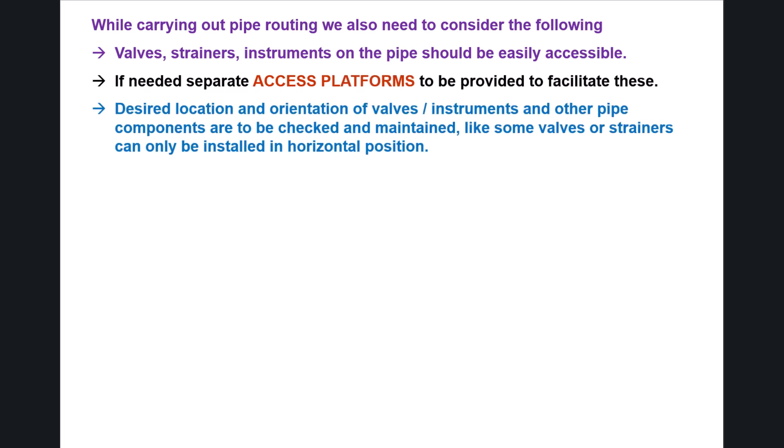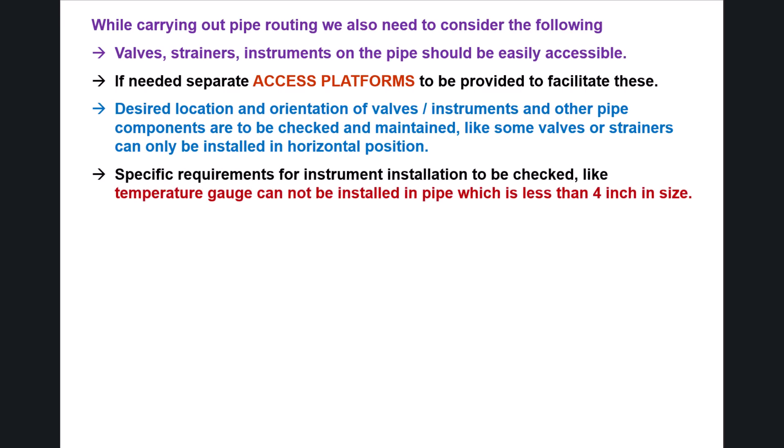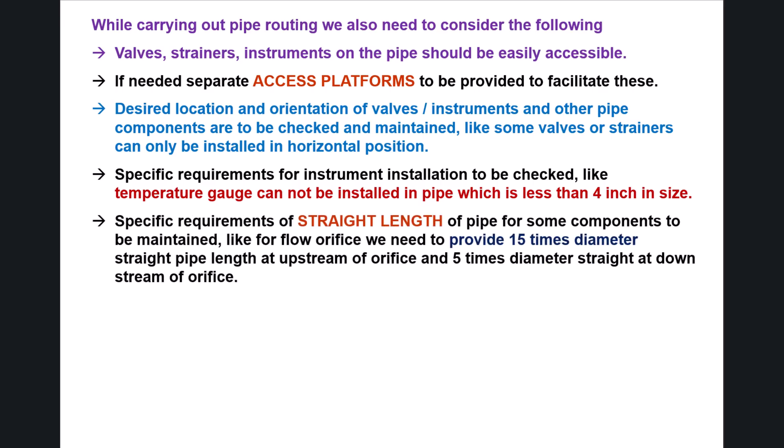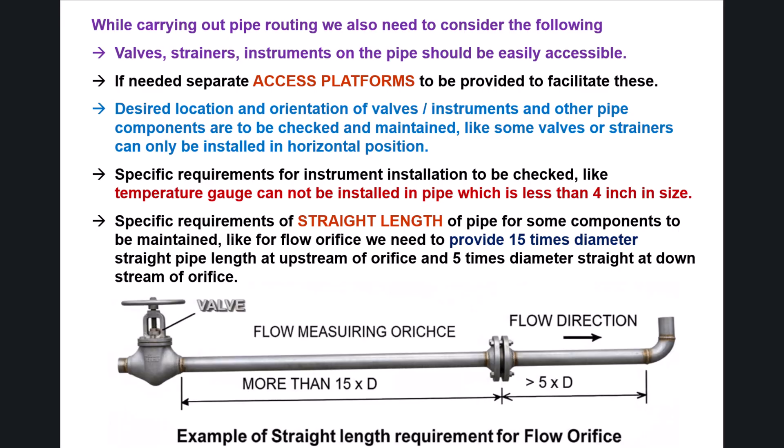The desired location and orientation of valves, instruments, and other pipe components are to be checked and maintained — for example, some valves or strainers can only be installed in a horizontal position. Specific requirements for instrument installation must also be checked; for instance, a temperature gauge cannot be installed in a pipe less than 4 inches in size. Specific straight length requirements must be maintained — for a flow orifice, 15 times the pipe diameter of straight pipe is required upstream and 5 times the diameter downstream.